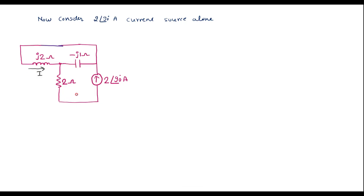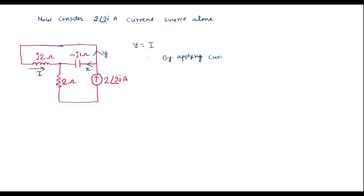So here we can see that there are 2 loops — this is one loop and this is one loop. The same circuit I can redraw. Here we can see that the 2∠90° amp current will divide: part of the current will flow through one branch and part through the other. We will assume that the current through one branch is x and the current through the other branch is y. So here y is nothing but i, that is y = i. We will apply the current division rule to calculate y.